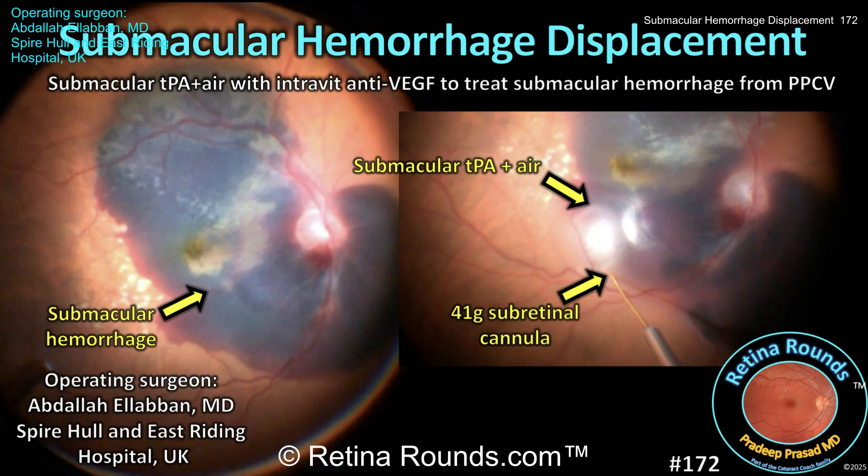Management options include clinic-based pneumatic displacement and surgical displacement. Our very special guest surgeon today is Dr. Abdallah El-Aban, Senior Consultant at Spire Hull and East Riding Hospital in the UK. Dr. El-Aban chose us a beautiful case of surgical submacular hemorrhage displacement using subretinal TPA, air, and intravitreal anti-VEGF. The anatomic and functional outcomes are truly outstanding. At the end of the case, we will review the pros and cons of pneumatic versus surgical displacement, as well as some potential complications to be aware of. Thank you, Dr. El-Aban, for sharing this case.